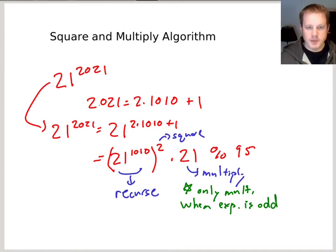So why do we have to multiply by 21 here is because when we broke down the original exponent, it's 2 times 1010 plus 1. That plus 1 is why we have to multiply by 21. If it was just raising to the power of 2020, then it would just be 21 to the 1010 squared, and we wouldn't need to do the extra multiply.